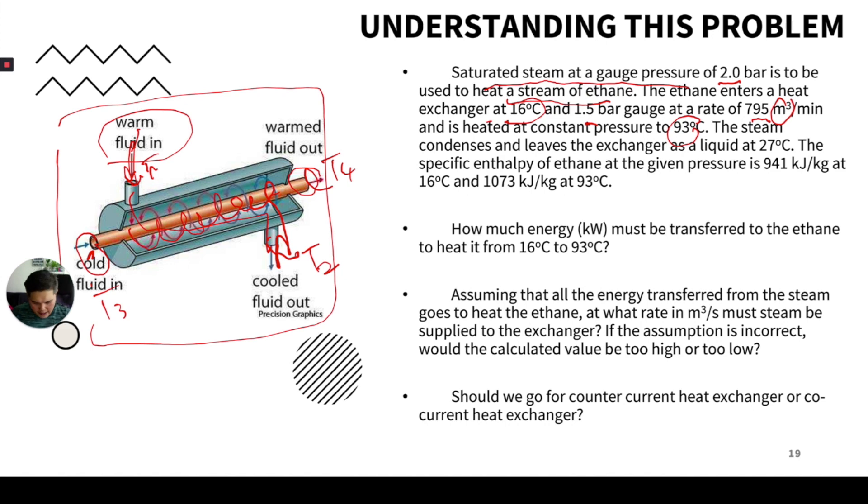The steam condenses and leaves the exchanger as a liquid at 27 degrees Celsius. So here we are not given the temperature, but you know that it is at 2 bar, so you can get the temperature from the steam table.